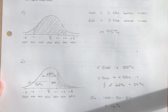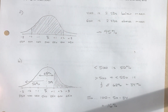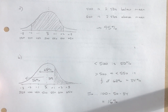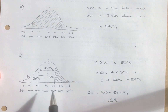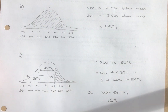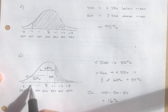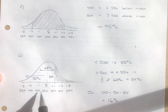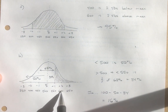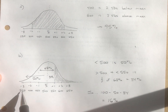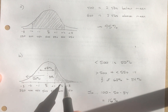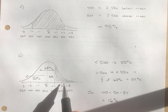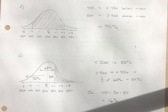So there you have it — a little work with the normal distribution and the empirical rule. What comes up next, you might ask: what happens if a number is like 510 or 430 — numbers that are not exactly one, two, or three standard deviations above or below the mean? In the next video, we're going to talk about z-scores so that we can deal with those.